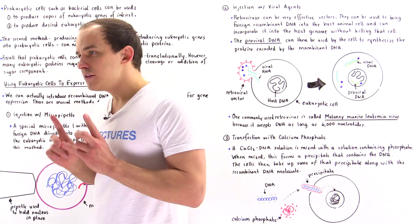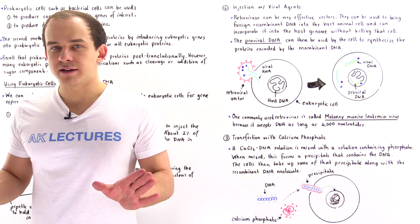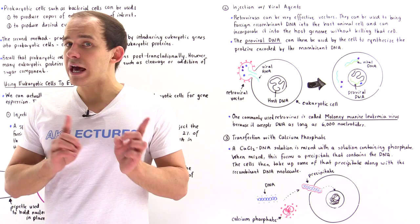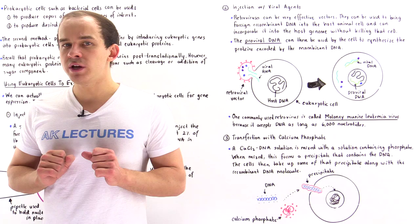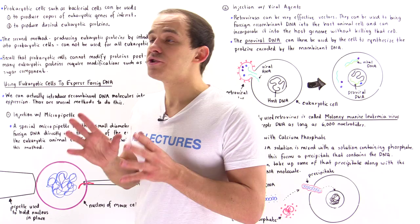Now there's a problem with the second method — it does not always work. That's because there is another difference that exists between prokaryotic and eukaryotic cells. Unlike in eukaryotic cells, in prokaryotic cells, once the protein is synthesized following translation, that protein is not modified in any way. But in many eukaryotic cells, many eukaryotic proteins are actually modified in different ways in the Golgi apparatus following translation.